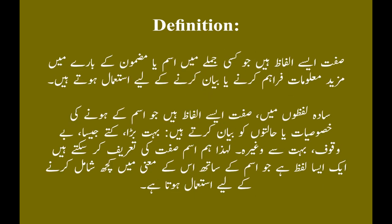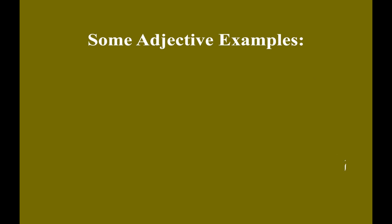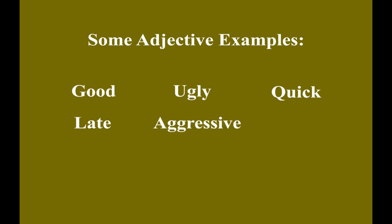Adjectives are words that are used to describe the meaning of the noun or the subject. Some adjective examples: Good, Ugly, Quick, Late, Aggressive, Beautiful, Honest, etc.